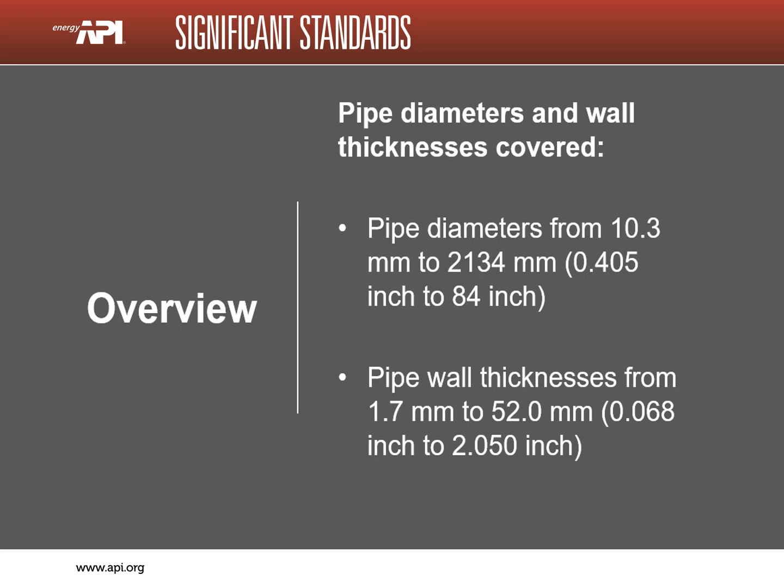The 5L specification covers a wide range of pipe diameters from 0.405 inch to 84 inches. Pipe wall thickness also has a wide range from 0.068 inch to over 2 inches. Note that all the different diameters cannot be made in each thickness. The ratio of diameter to thickness is known as the D to T ratio. Industry professionals do not agree on an exact range for D to T ratio.